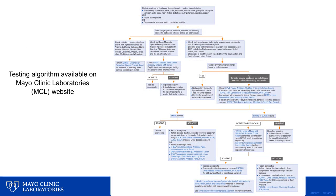Diagnostic testing for tick-borne diseases can be tricky, and the type of test ordered really depends on multiple aspects, including geographic exposure and timing of presentation post-symptom onset. In an effort to simplify and optimize test ordering practices for suspected tick-borne illnesses, we at Mayo Clinic have put together an algorithm specifically for acute tick-borne disease testing, which I'll go over today step-by-step. This algorithm is available to anyone on the Mayo Clinic Laboratory's website.